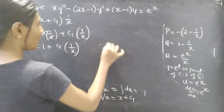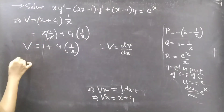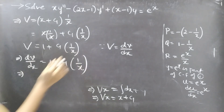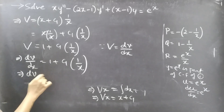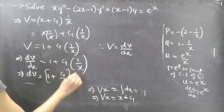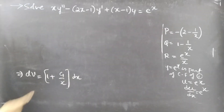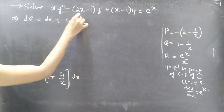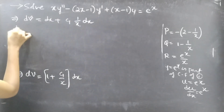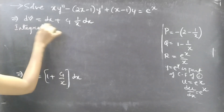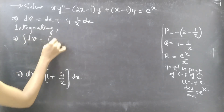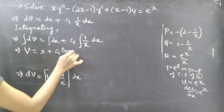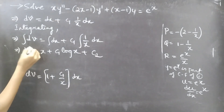Since capital V = dv/dx, we have dv/dx = 1 + C₁/x. Taking dx to the right-hand side: dv = (1 + C₁/x) dx = dx + C₁·(1/x) dx. Integrating both sides: v = x + C₁·log x + C₂.